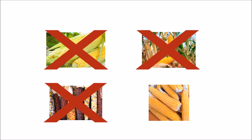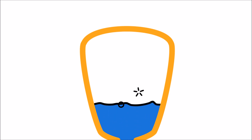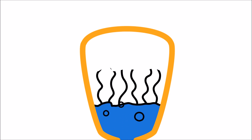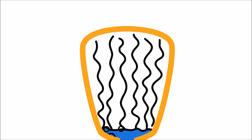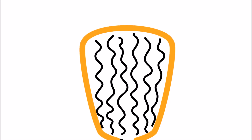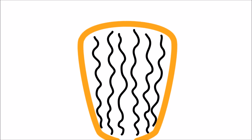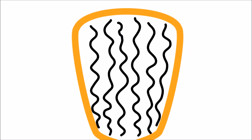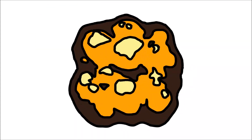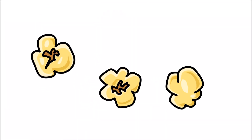Not all types of corn pop when heated. Each kernel of popcorn has some water inside it. When the water is heated, it turns into steam. The steam builds up inside the kernel, expanding the starchy endosperm until the pericarp shell can no longer contain the pressure and explodes, forming a fluffy piece of popcorn.